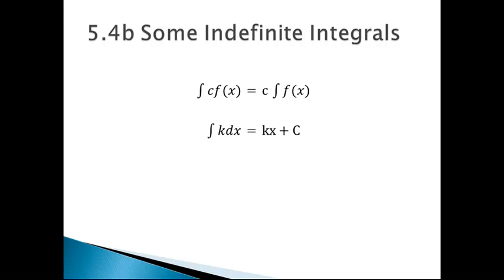The integral of a constant itself — not a constant times a function, but the integral of a constant — is going to be the constant times x plus a constant, which of course could be 0, in which case it would just be kx. I can verify this because if I take the derivative of the right side, I should end up with k. And that's exactly the case: the derivative of kx is k times 1 times x to the 0, which equals k. And of course the derivative of a constant is 0. So this works.